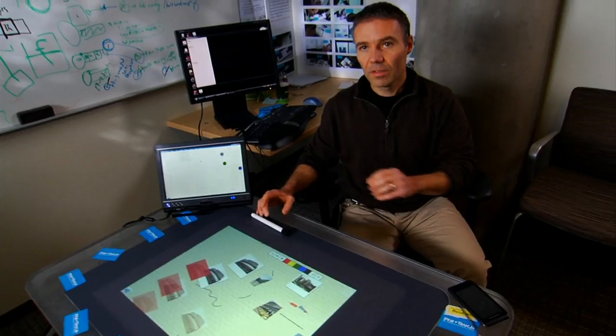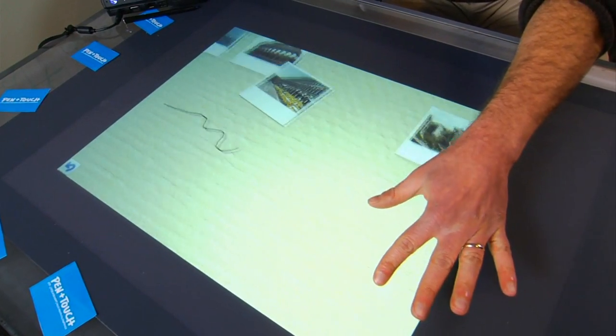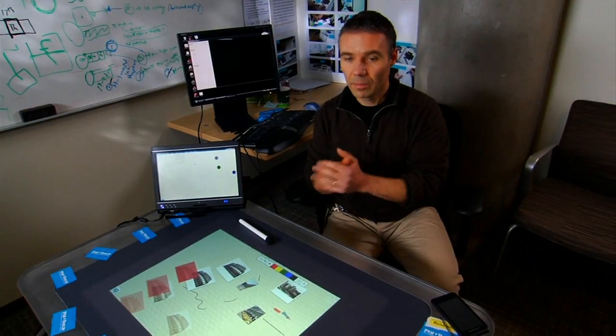What I showed you on Surface was that I could pan and zoom using my non-dominant hand while writing with my dominant hand.